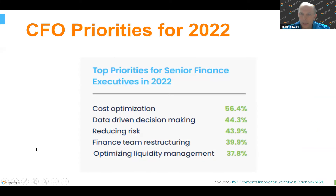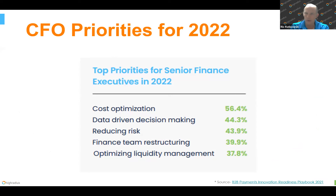This is a survey done by the B2B Payment Innovation Readiness Playbook in 2021. The CFO priorities are cost optimization, data-driven decision-making, reducing risk, finance team restructuring, and optimizing liquidity management. Our solution plays in three of these four — cost optimization by reducing heads, data-driven decision-making by having more information about the customer, reducing the risk of cash and delinquent accounts, and optimizing liquidity management. That's where High Radius really helps out.